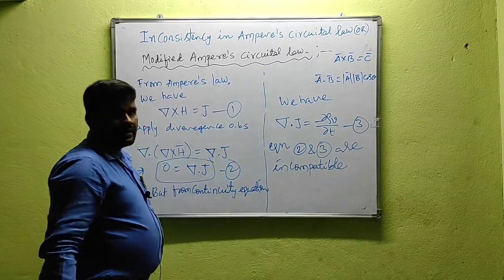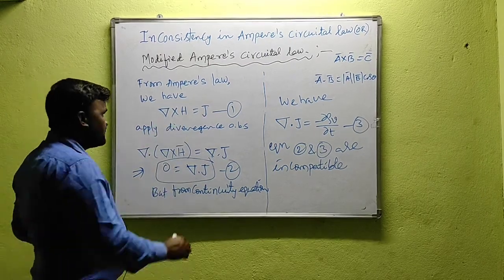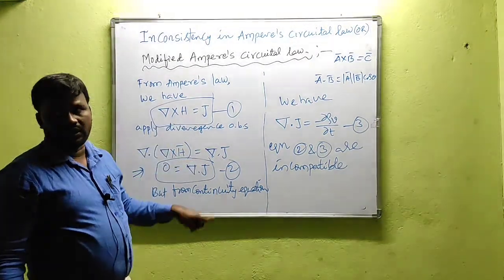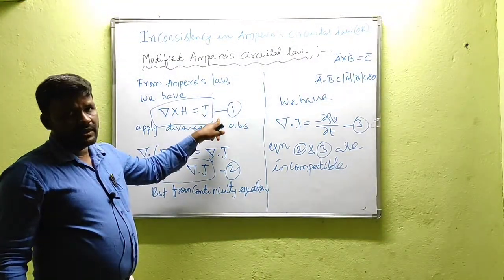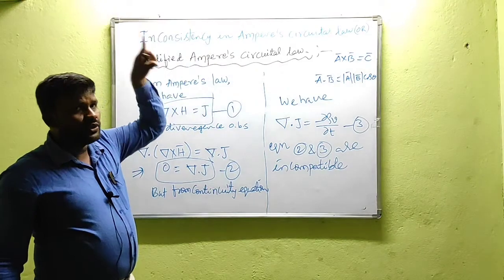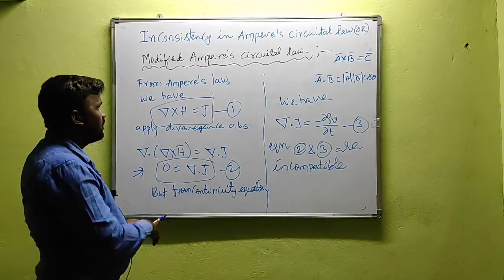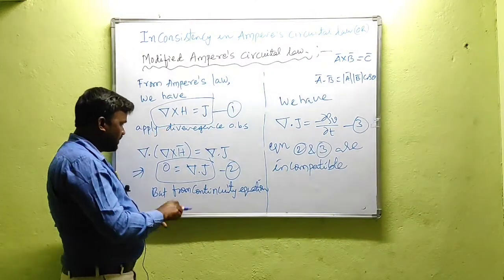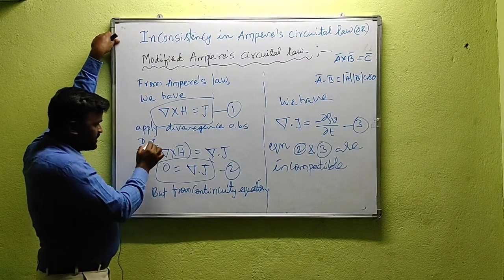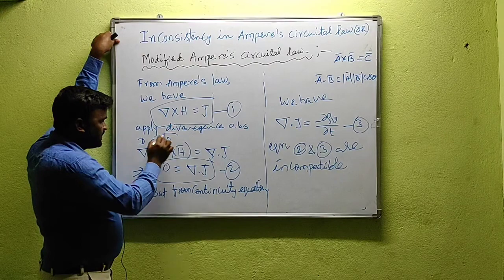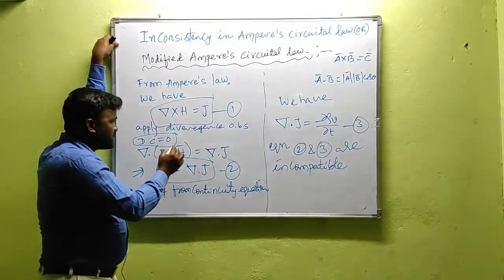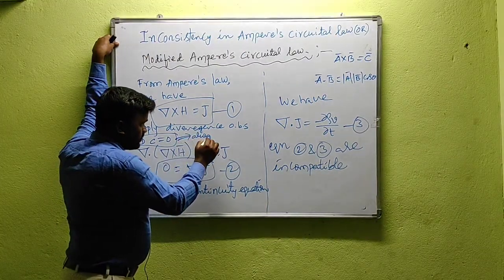Why is this happening? Because there is an inconsistency or invalidity in equation 1 — that is, the Ampere's Circuit Law. So that is why we need to modify Ampere's Circuit Law. We can remember this vector identity: the divergence of the curl of any vector is always 0. This is always true.